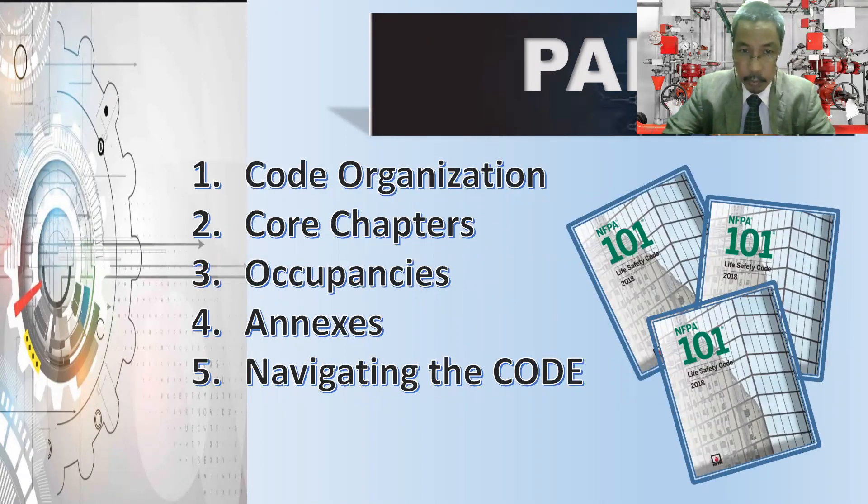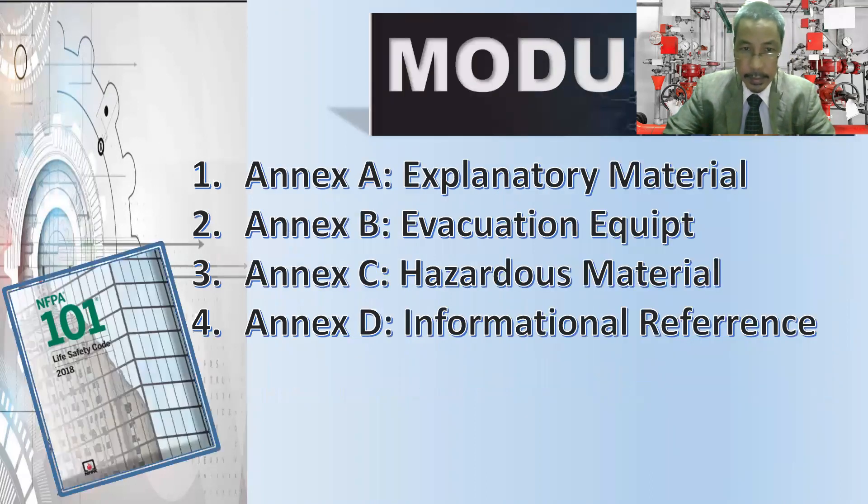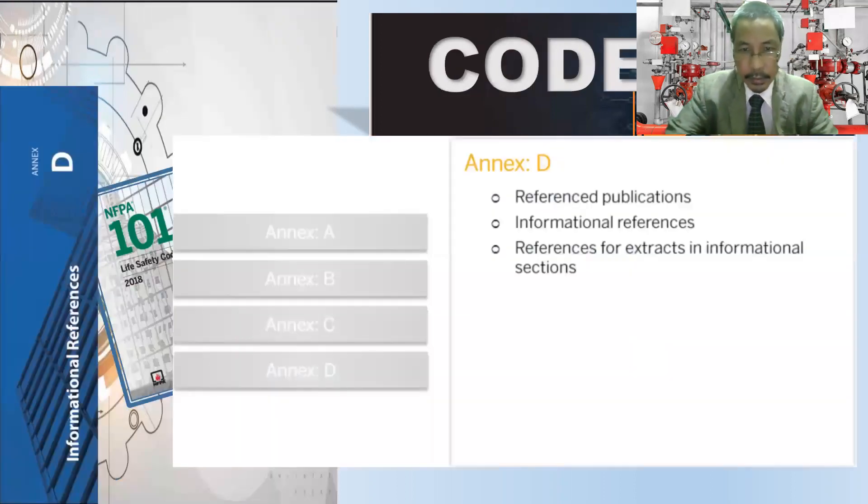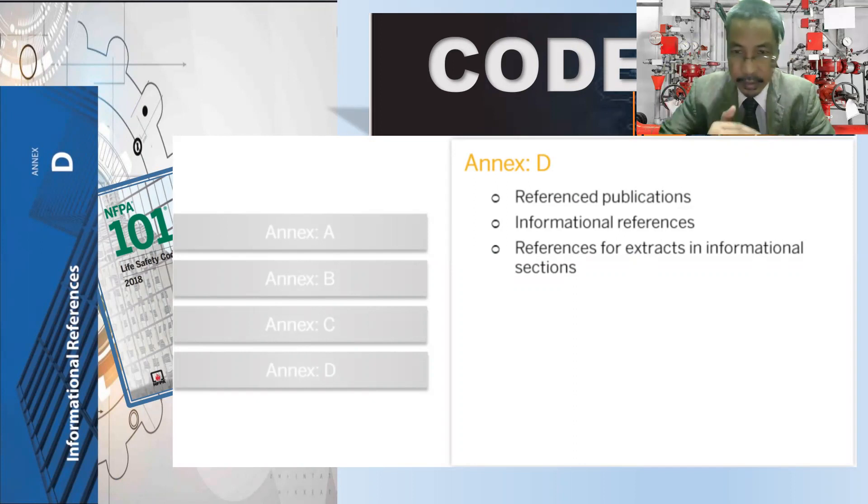This is Part 1 and we are in the Annex D informational reference. In informational reference Annex D, we have reference publications. There are listings of these publications related to specific chapters, chapter per chapter informational references, again related to that specific chapter.